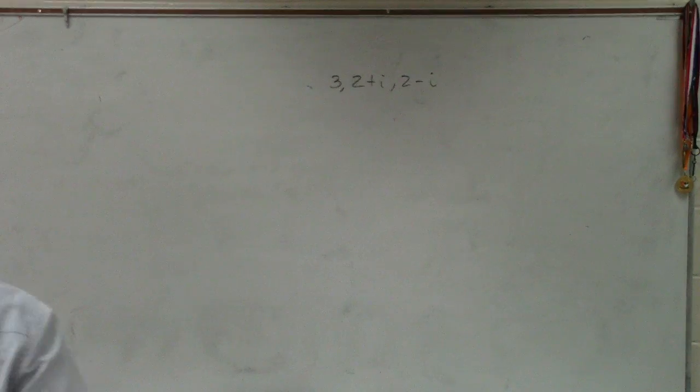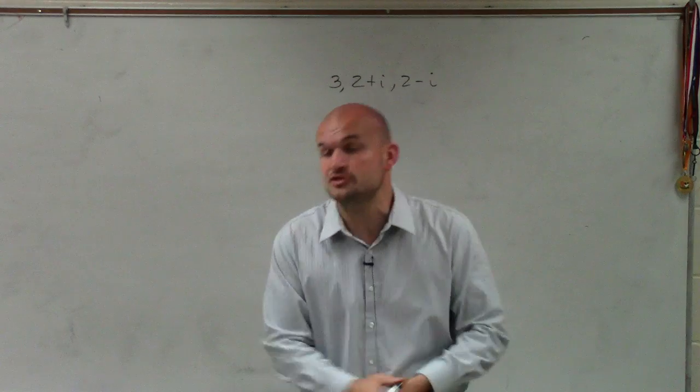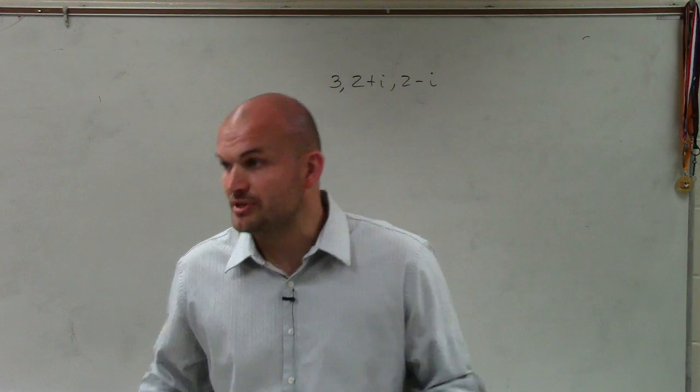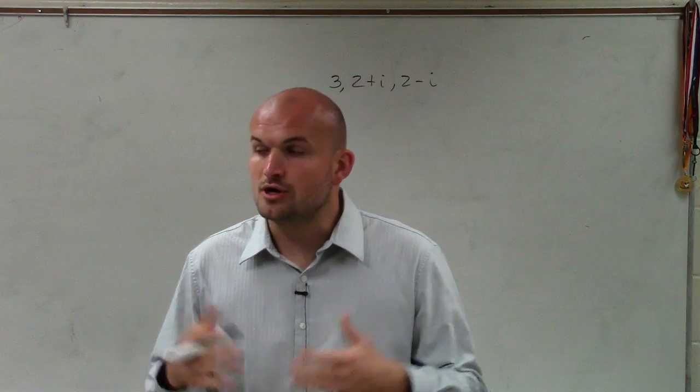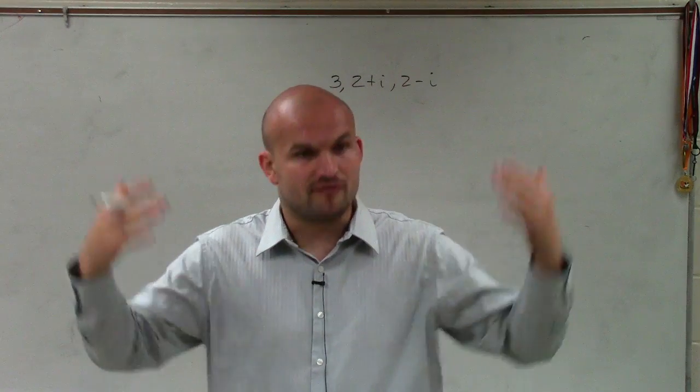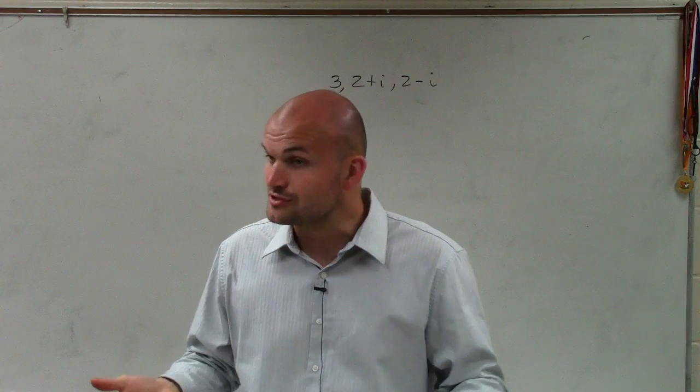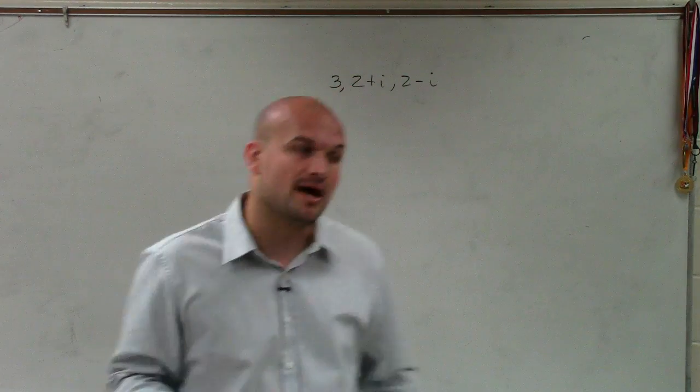When looking at a problem like this, these are what we call our solutions. And here's the intercepts. They want us to create a polynomial with integer coefficients. So what we're going to be doing is working backwards. Rather than having a polynomial, factoring it, and finding what x is equal to, which could be multiple solutions, now we're given the solutions and we want to work backwards to the polynomial.